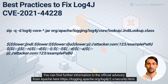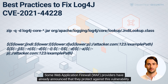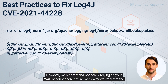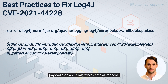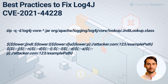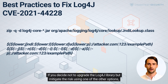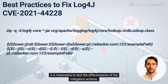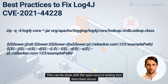You can find further information in the official advisory from Apache at https://logging.apache.org/log4j/2.x/security.html. Some web application firewall (WAF) providers have already announced that they protect against this vulnerability. However, we recommend not solely relying on your WAF, because there are so many ways to reformat the payload that WAFs might not catch all of them — some examples are shown in the last two lines on the slide. If you decide not to upgrade Log4j but mitigate the risk using one of the other options, it is imperative to test the effectiveness of the mitigation actions using the open source testing tool described above.